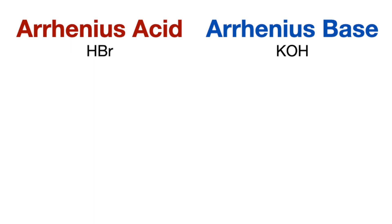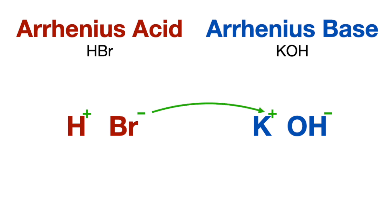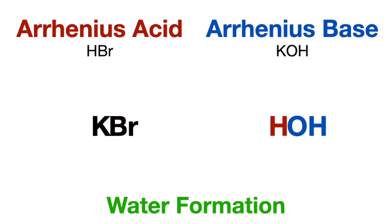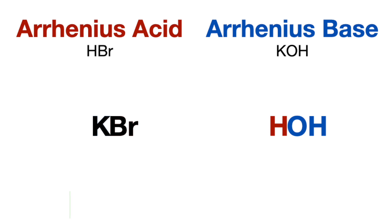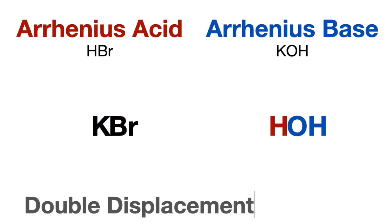Let's look more closely at what happens during the reaction. Acids and bases are electrolytes, which are soluble in water. An acid in the presence of a base will become even more soluble in water. Both will dissolve in water, releasing a proton and a hydroxide. And opposites attract, so the bromine will attract the potassium and the hydroxide will attract the proton, recombining to form salt and water. Arrhenius acid-base reactions are easy to identify because there's water formation. This is referred to as a neutralization reaction, which occurs via recombination reactions or double displacement reactions.